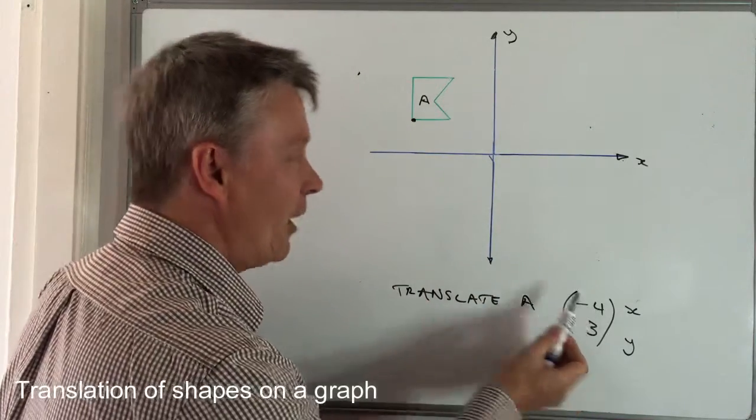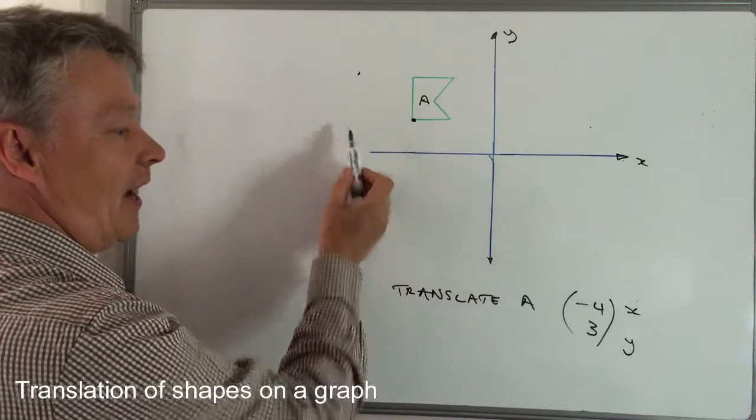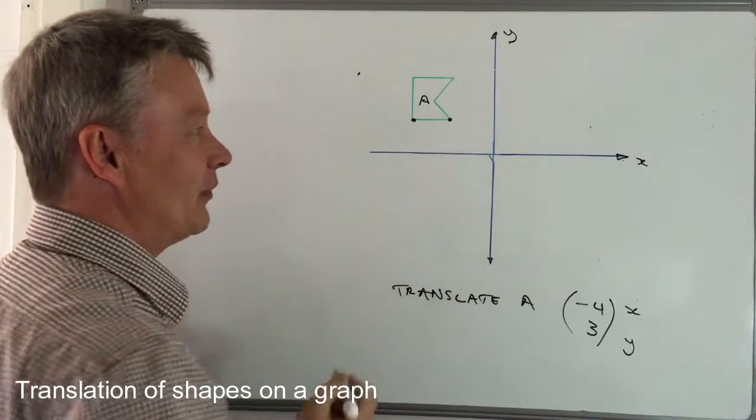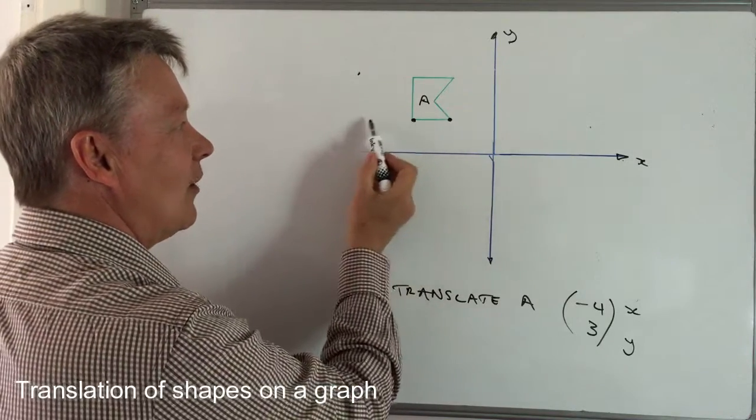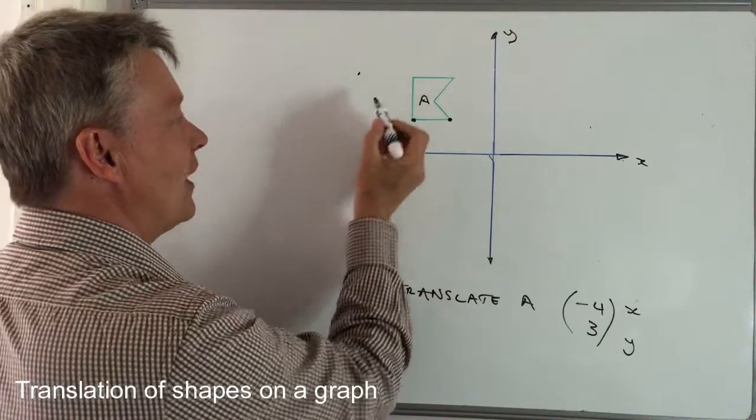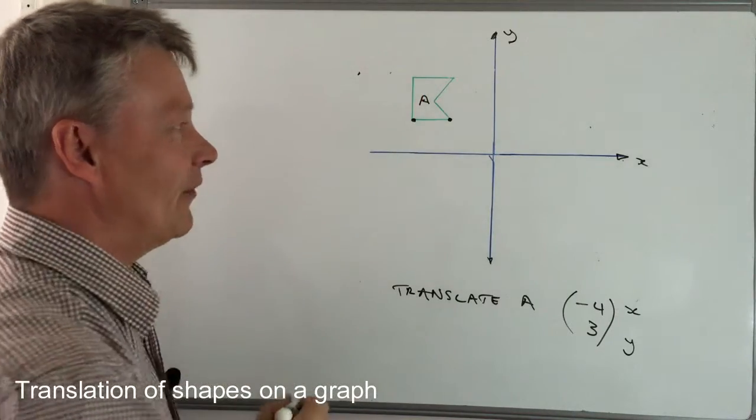It's going to go along minus four and then up three. I'm going to do exactly the same with this point here - it's going to go along minus four and then up three, so it's going to end up something like about that.